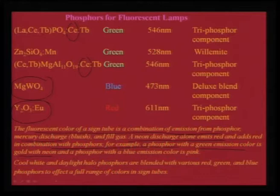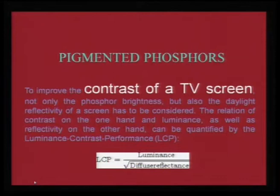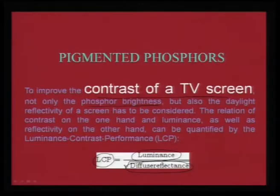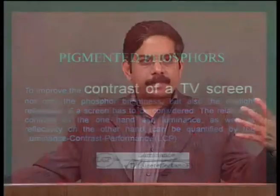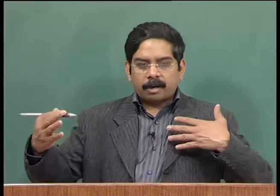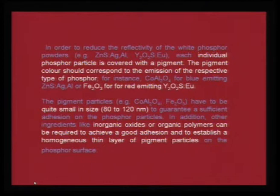When discussing the contrast of a TV screen, contrast is nothing but the luminescence contrast performance, defined as the ratio of luminescence to diffuse reflectance. Diffuse reflectance comes from stray radiation. To improve contrast, not only is phosphor brightness important — just because it glows bright does not make it a good candidate — because we need to combat daylight reflectivity of the screen. Contrast is a trade-off between phosphor brightness and daylight reflectivity, and it is generally agreed that phosphors must be pigmented so that daylight reflectivity can be controlled.